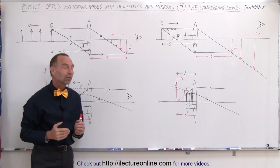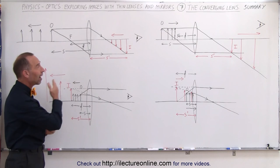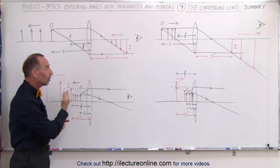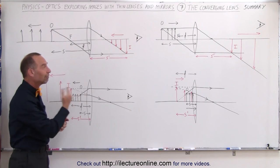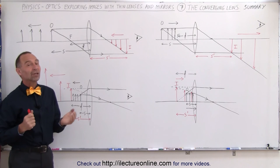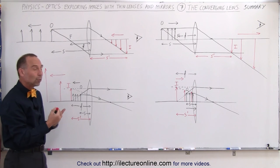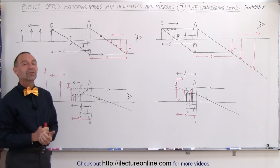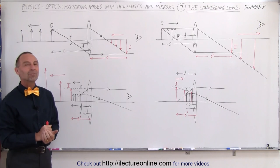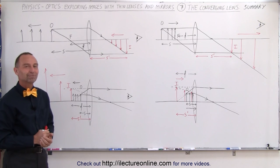So that's what happens with converging lenses as you place the object in various places and move it from that initial point. Now you have a good feel for what happens to the image with converging lenses. In the next set of videos, we'll begin to do the same thing with diverging lenses.